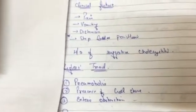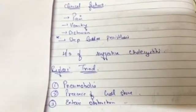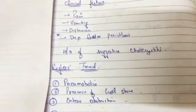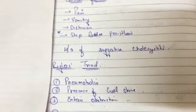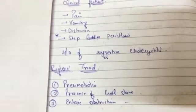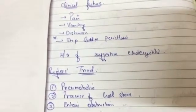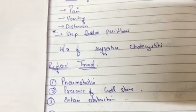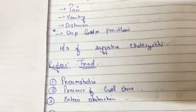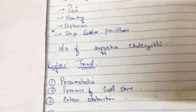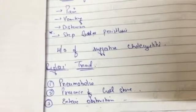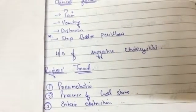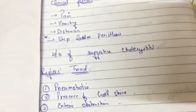Next, I will talk about Rigler's triad, which you should know if you want to diagnose a patient with gallstone ileus. The first is pneumobilia — gas present inside the gallbladder. The second is presence of a gallstone. The third is enteric obstruction. If you find these three things, you should always think about gallstone ileus.